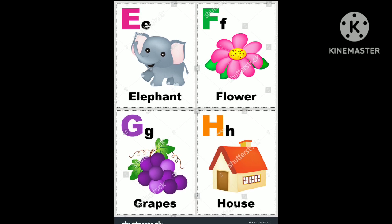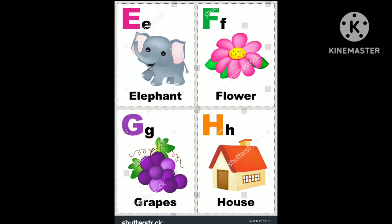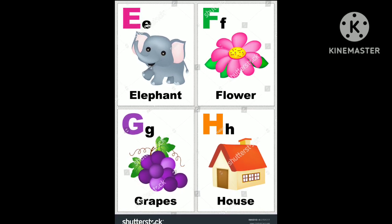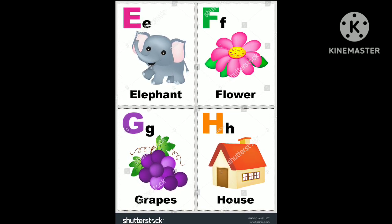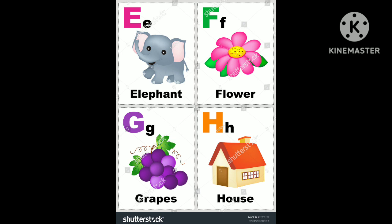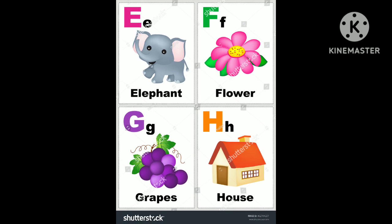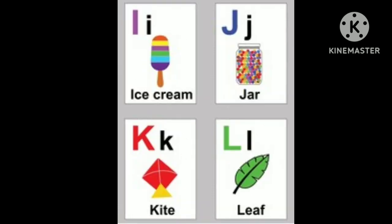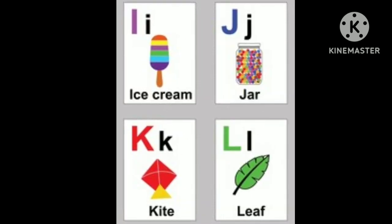G is for grapes, H is for house, I is for ice cream,